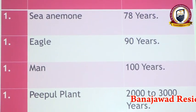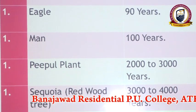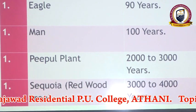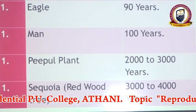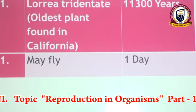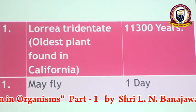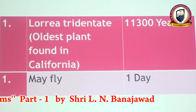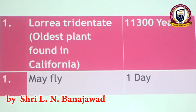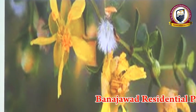Eagle lives for 90 years, human being 100 years, peepal plant can survive for 2,000 to 3,000 years. Sequoia, also called redwood tree, can survive for 3,000 to 4,000 years. Loria is the oldest plant found in a botanical garden of California, with a lifespan of 11,300 years. Mayfly can survive for only one day — within one day they complete their life cycle.